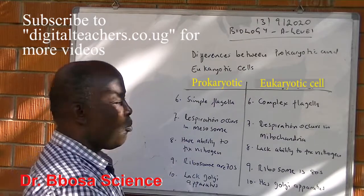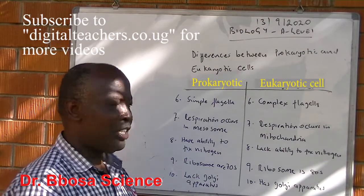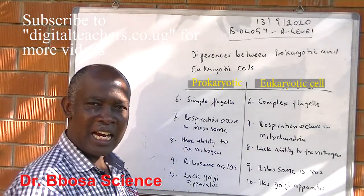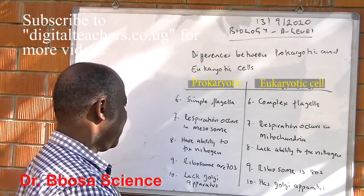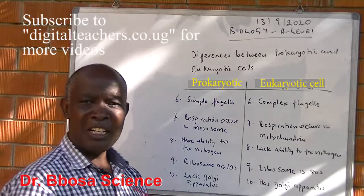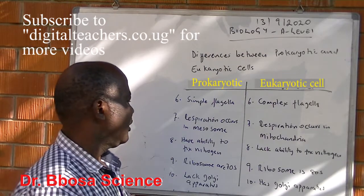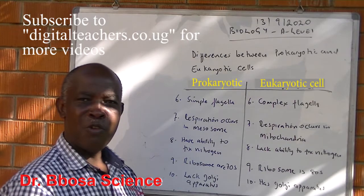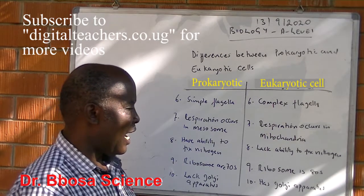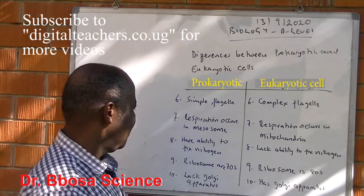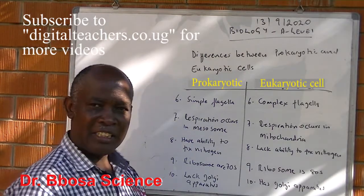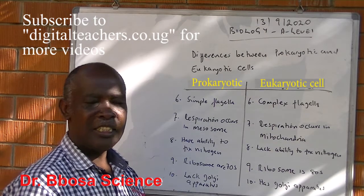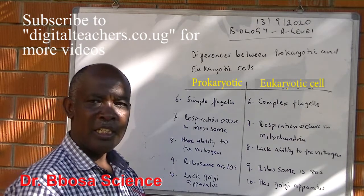8: Prokaryotic cells have the ability to fix nitrogen, while eukaryotic cells lack the ability to fix nitrogen. 9: Prokaryotic cells have small ribosomes which are 70S, while eukaryotic cells have big ribosomes which are 80S. 10: Prokaryotic cells lack a Golgi apparatus, while eukaryotic cells have a Golgi apparatus.